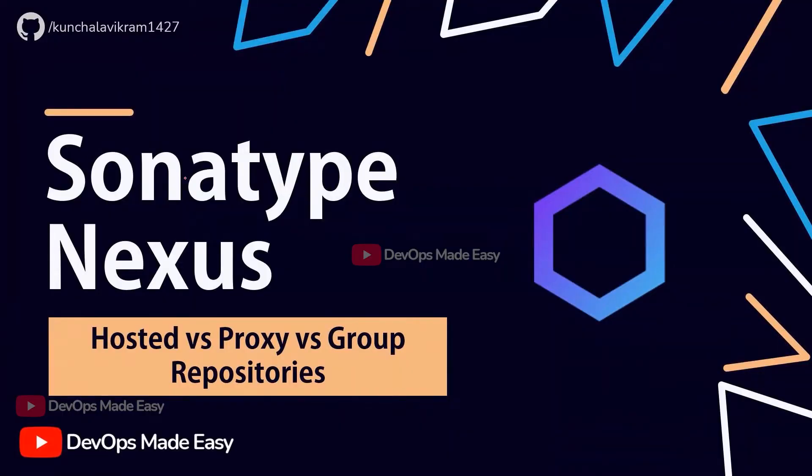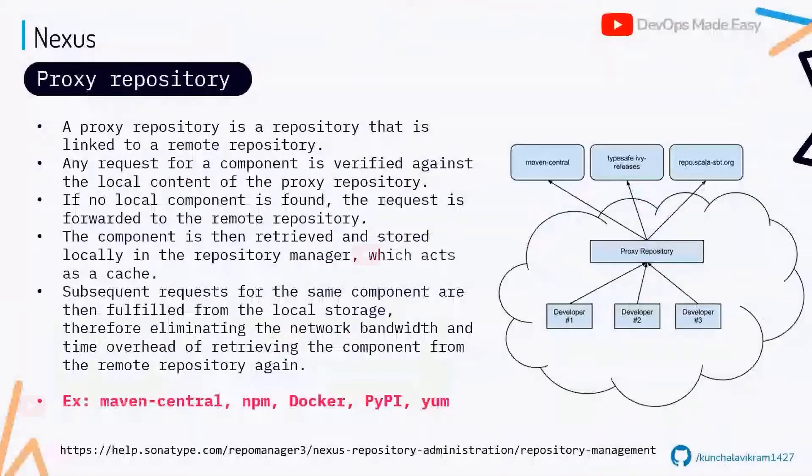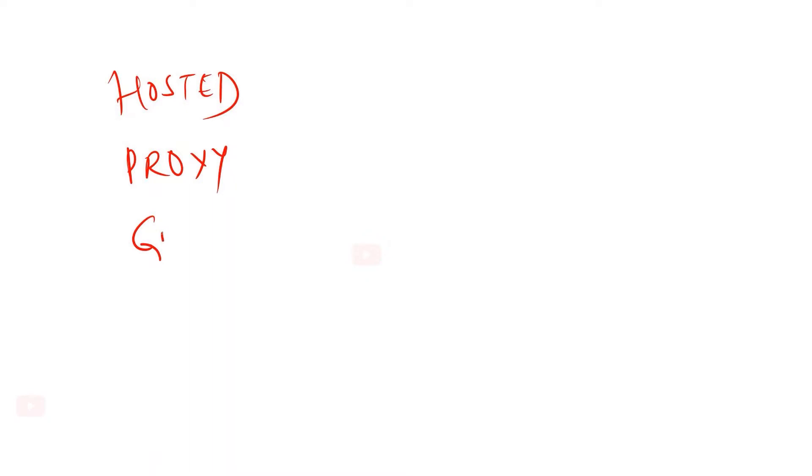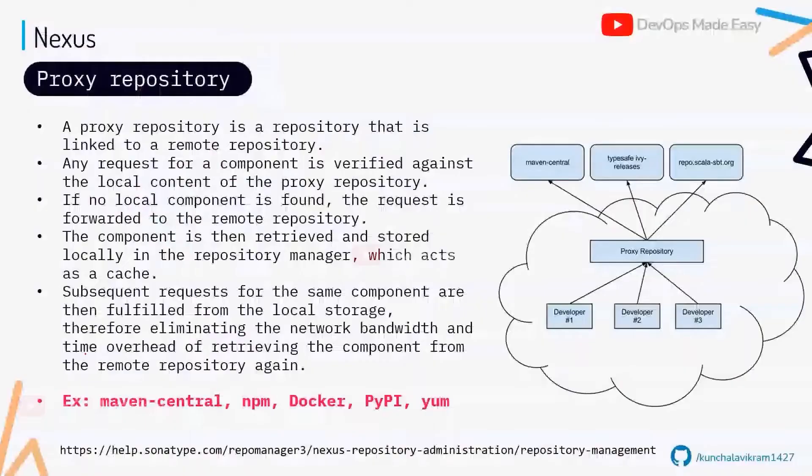Let's talk about hosted versus proxy. We have three types of repositories: hosted, proxy, and group. Group means you can group multiple repositories together, but the group itself doesn't have special meaning beyond that.